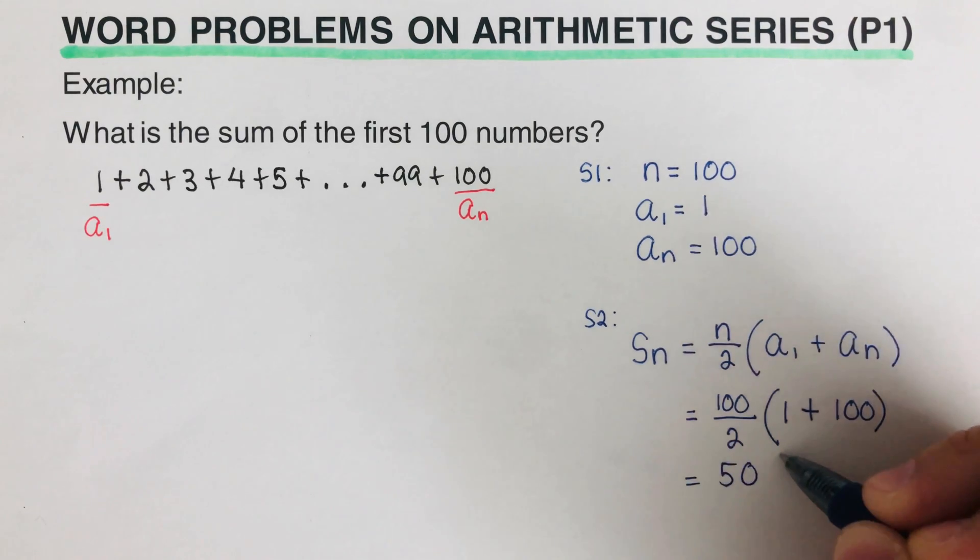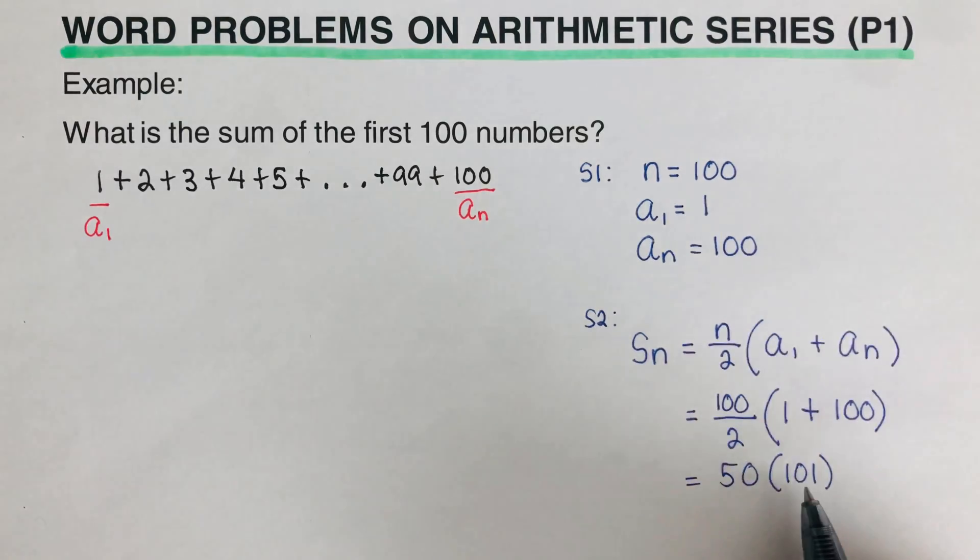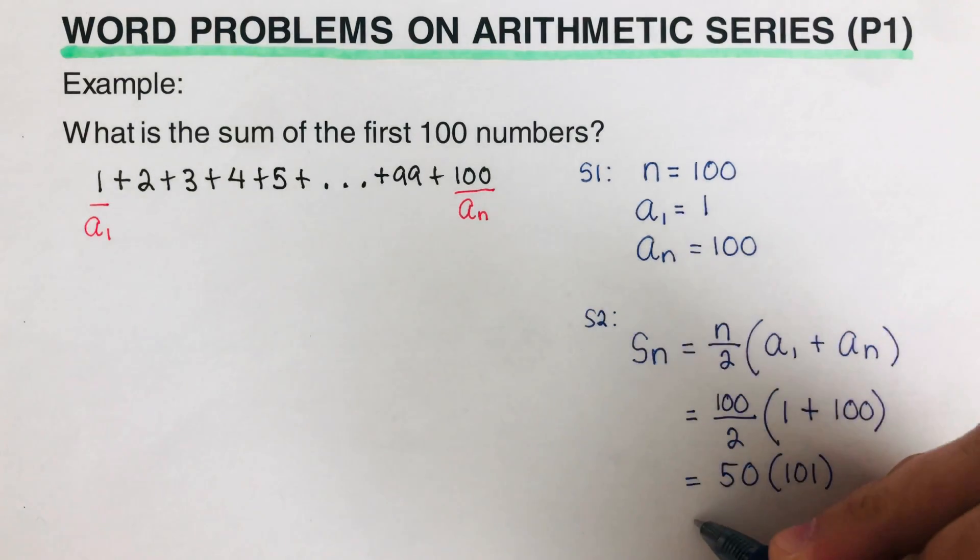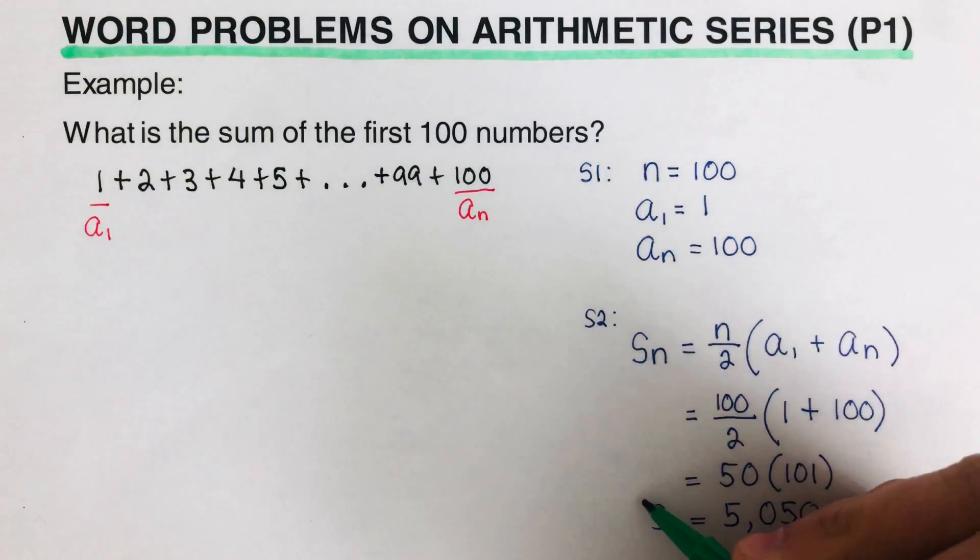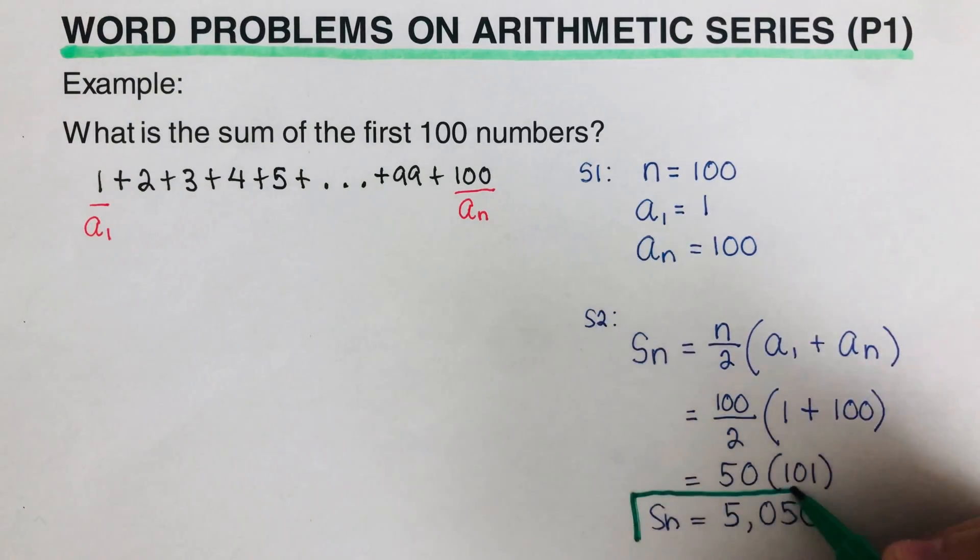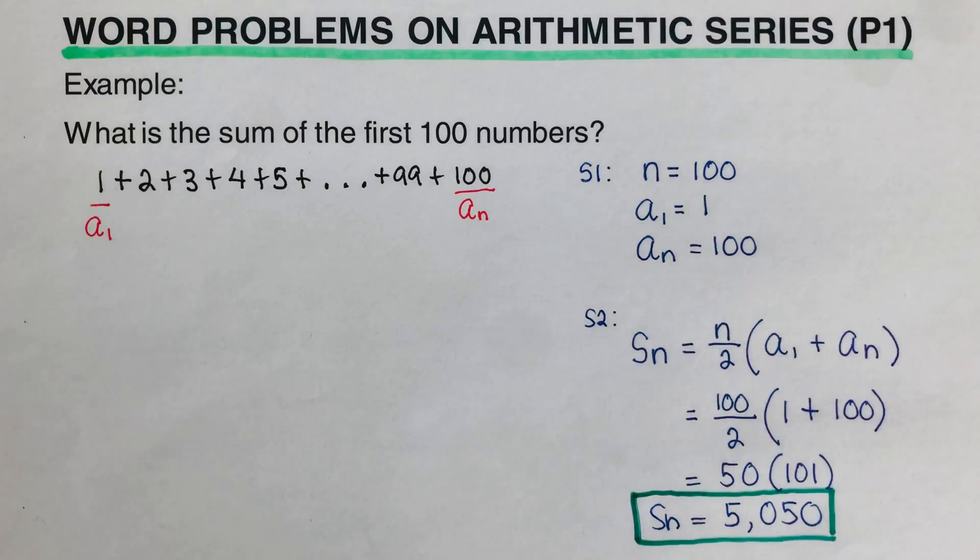So we can do the math here. 100 divided by 2 is 50, times—100 plus 1 is 101—and then once we multiply these two together, this would come out to 5,050. So the sum of all the numbers from 1 to 100 is 5,050. So this is the sum right here.